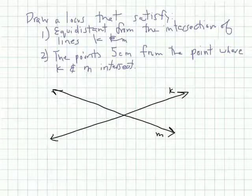So draw a locus that satisfies the following two conditions. One, they're equidistant from the intersection of lines K and M. So this is our intersection for lines K and M. Second, the points are 5 centimeters from the point where K and M intersect. Now again, I'm going to have to approximate 5 centimeters here. But first, let's just draw what's true for that they're equidistant from the intersection of K and M.